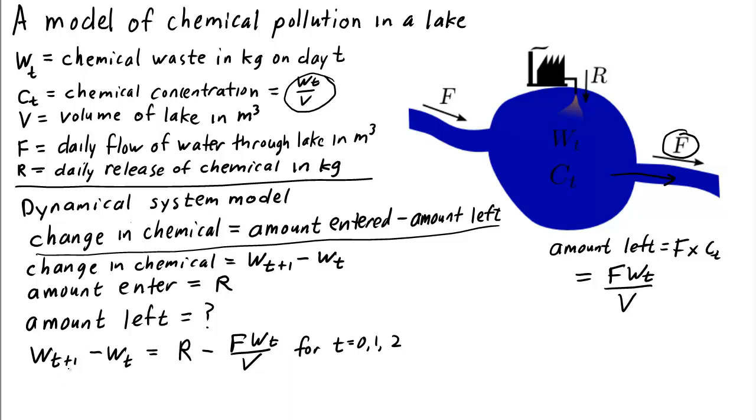We have our state variable w sub t and our rule for the evolution. The only thing that remains is to determine what the initial condition is. What is w naught, the amount of chemical pollution in day 0? Since we assume the lake was pristine before the factory was built, and t is the number of days since the factory was built, we should use the initial condition that the initial waste is just 0. So this is our discrete dynamical system model for the chemical pollution in the lake.